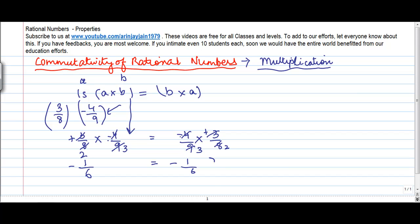So therefore in both cases the result is the same. So we say that for any two rational numbers a and b, a into b is equal to b into a. So changing the order by itself does not change the result insofar as multiplication is concerned for two rational numbers.